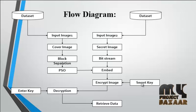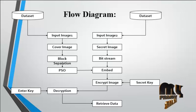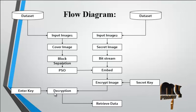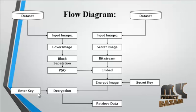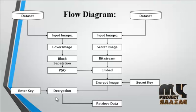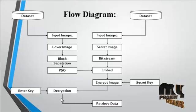This secret key is given by the user. The user can provide any key for the encrypted image, and the key must be a numerical value. After encryption, the decryption step is performed on the receiver side. The receiver can decrypt the image using the corresponding key. If the key matches the encryption key, the image will be decrypted; otherwise, if the key does not match, the image will not be decrypted.